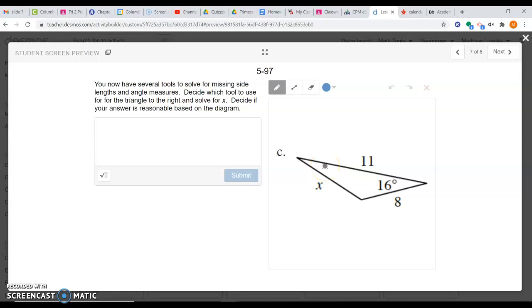When you get to slide 7, the tool we need is the law of cosines. I know this because I see one angle between two sides, and the side across from my angle is the variable x. It's a non-right triangle, so it's either law of cosines or law of sines. It's law of cosines because I have one angle between two side lengths.